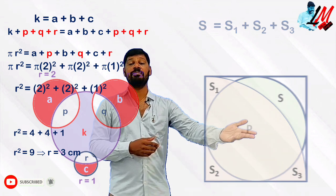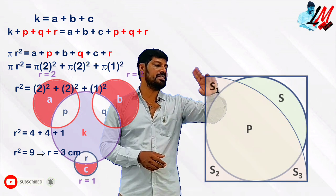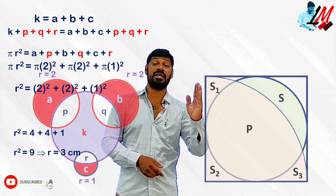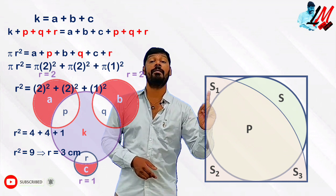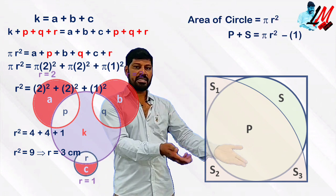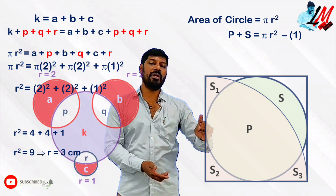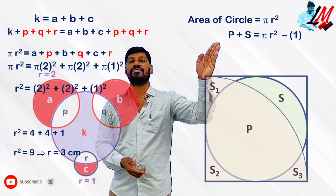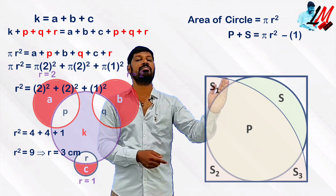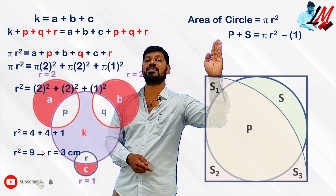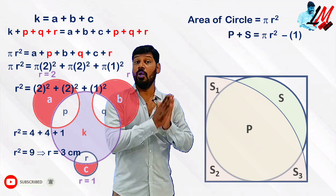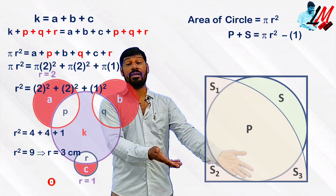The common portion of the quadrant and the circle is unnamed — let me call it P. Observe carefully: the circle is nothing but S plus P, and the quadrant is nothing but S1 plus S2 plus S3 plus P. Since the radius of the circle is unknown, let me call it R. So area of circle equals pi R square, and from the diagram S plus P equals pi R square. Let me call this equation 1.